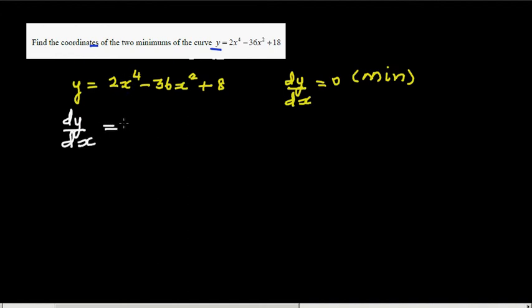And that I'm going to set equal to zero because I want to find the minimum. What can you factor out? Well, I can factor out 8x.